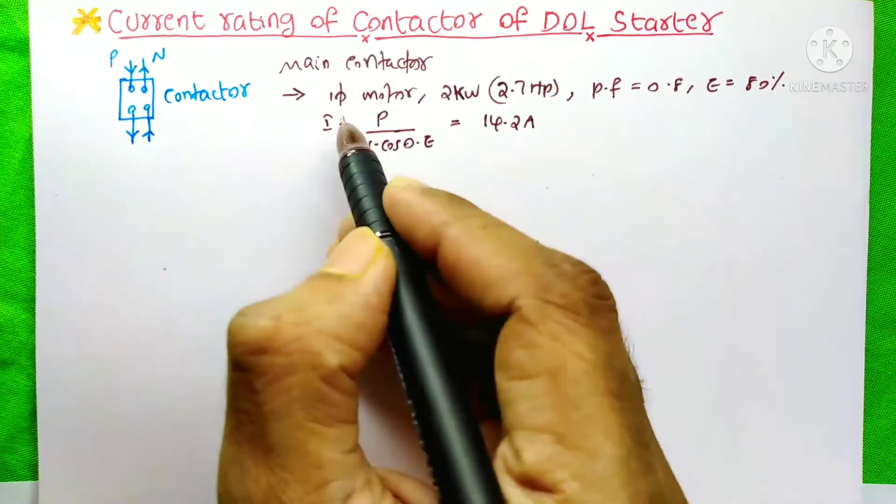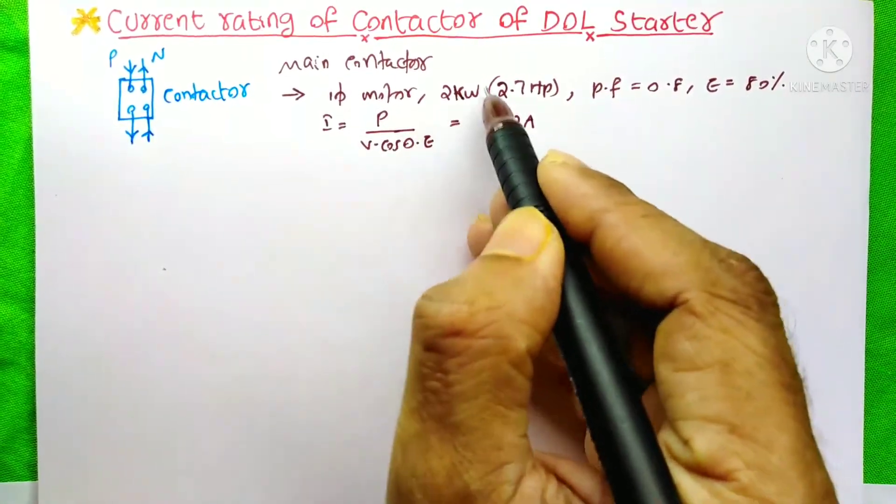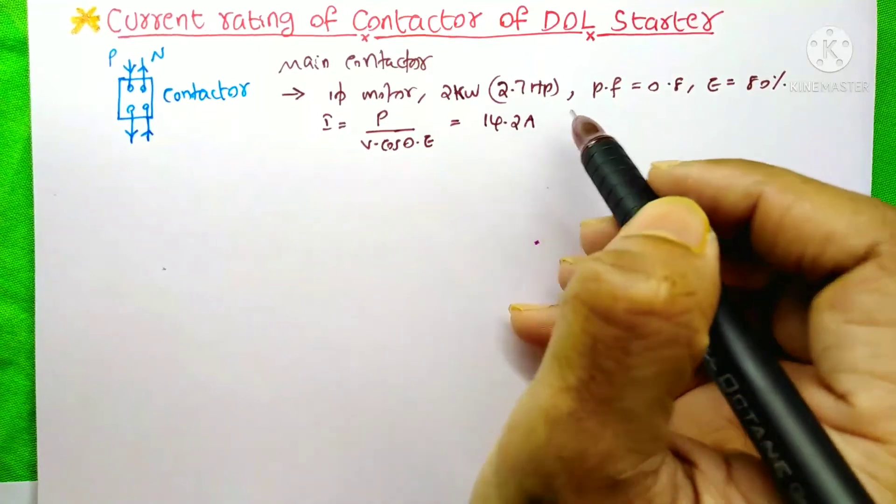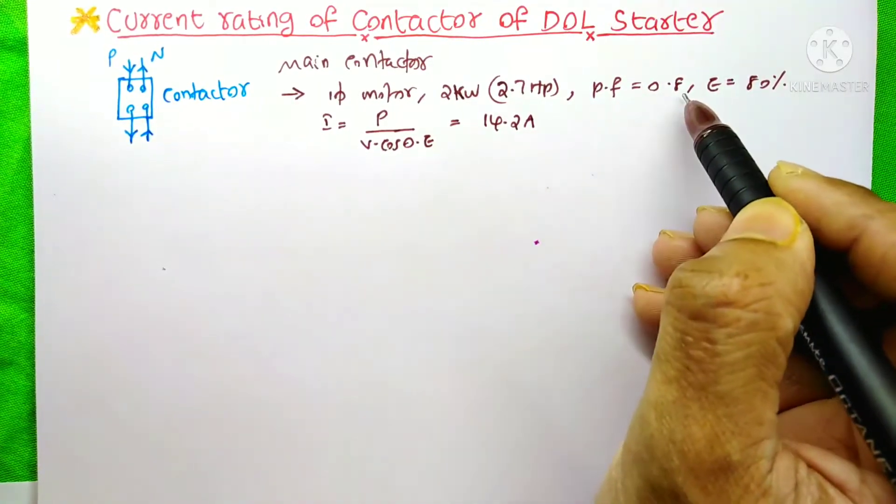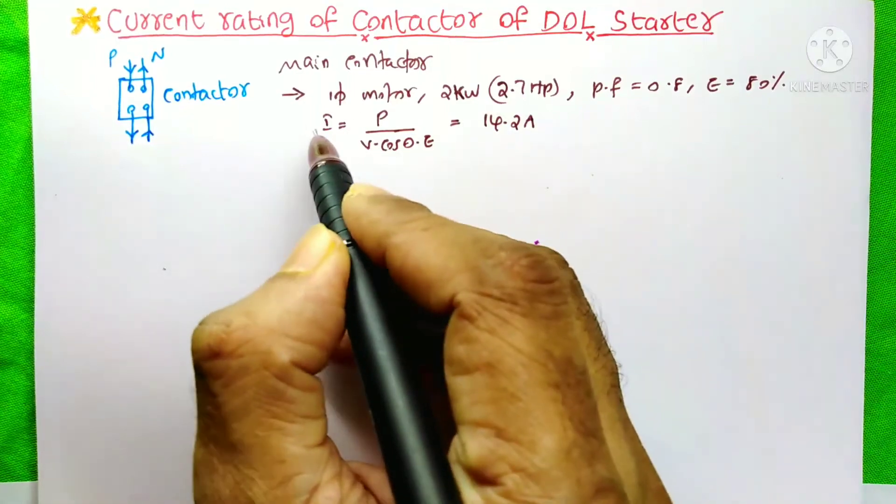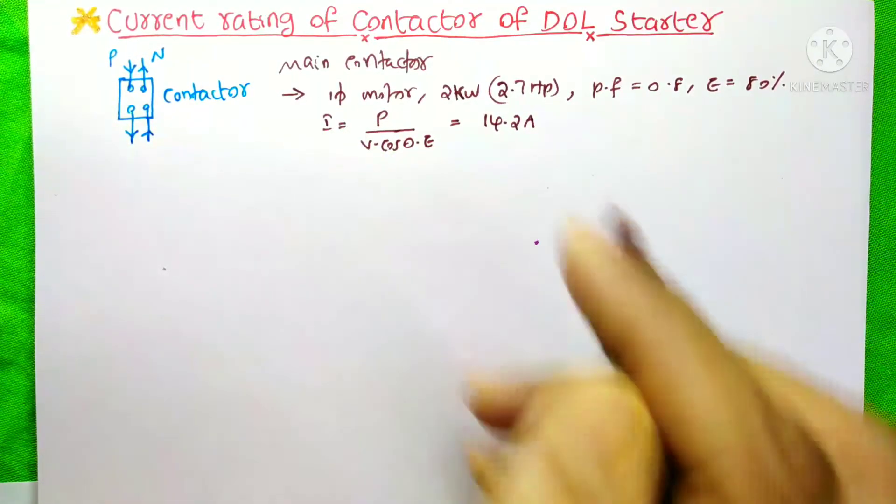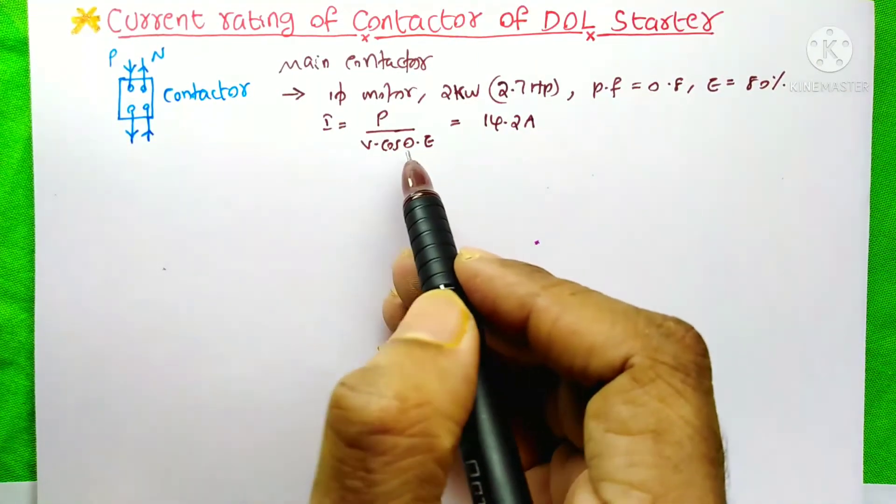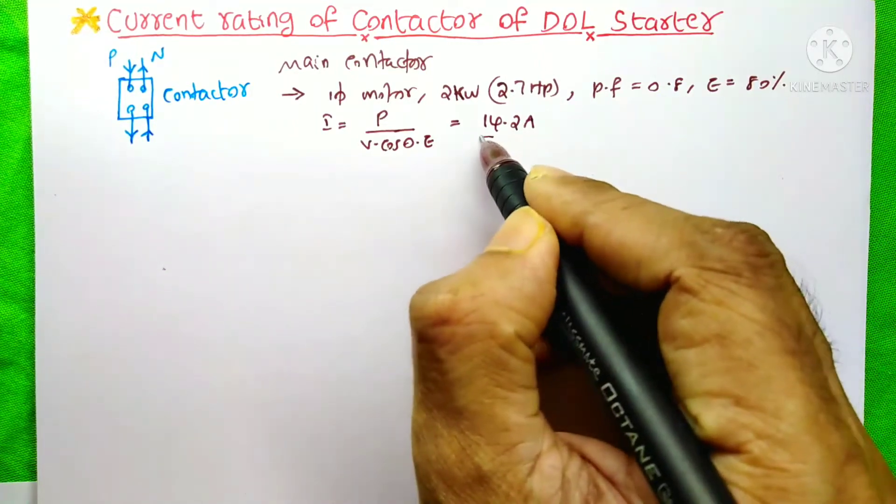Suppose I have a single-phase motor with a power of 2kW, that is 2.7hp, and its power factor is 0.8 and efficiency is 80%. So here I calculated the current by using the power formula: P divided by V times cos theta times efficiency. So the answer is 14.2A.